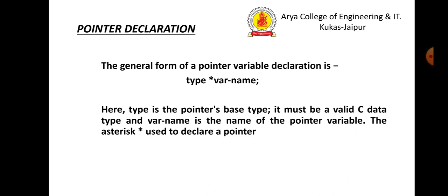Now, the pointer declaration. How do we declare a pointer? A pointer is declared by pointer type, asterisk symbol, and the variable name.